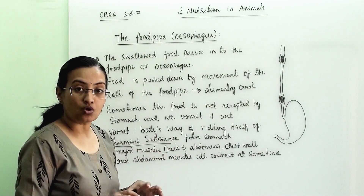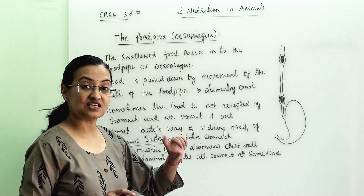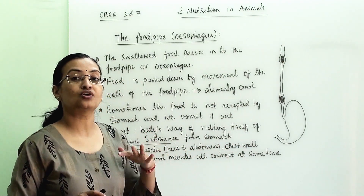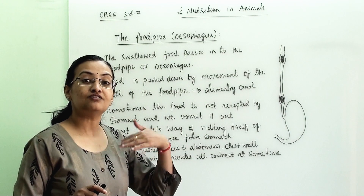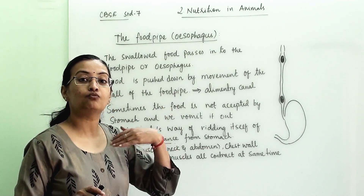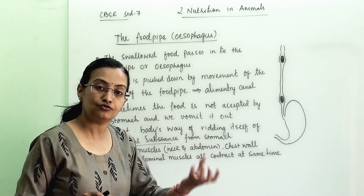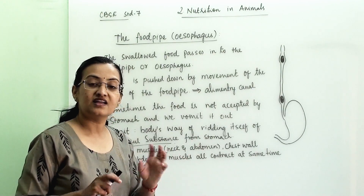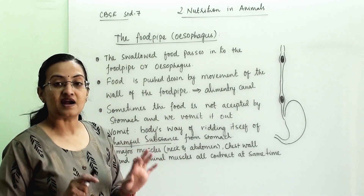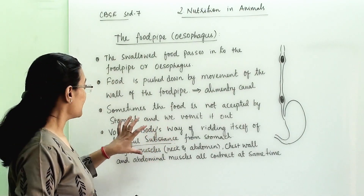When all these muscles contract at the same time, they put pressure on the stomach and the reverse process happens. We vomit out all the infection and bad food particles, and the stomach gets rid of the bad stuff. That is how vomiting happens.